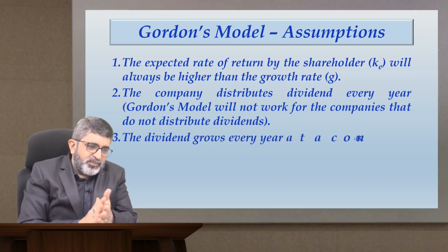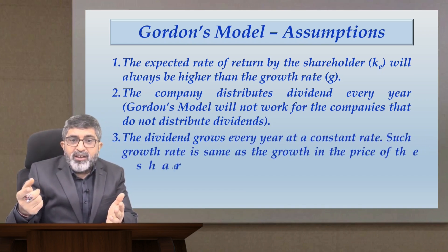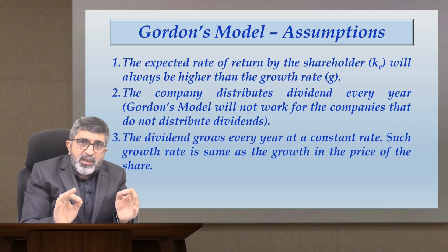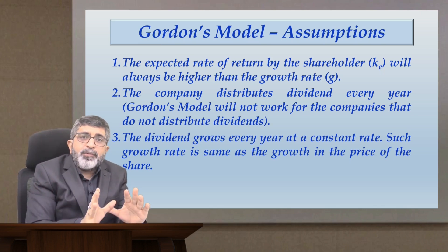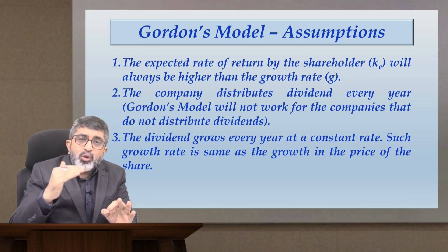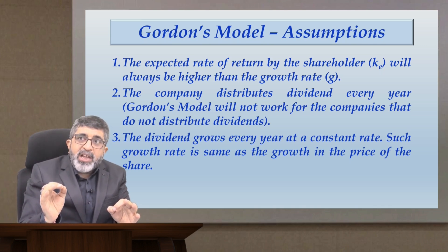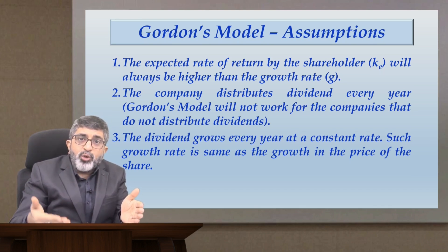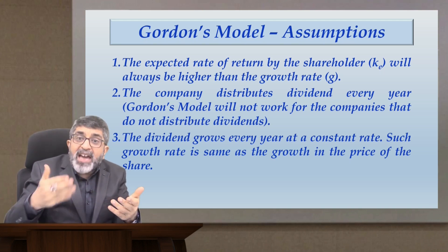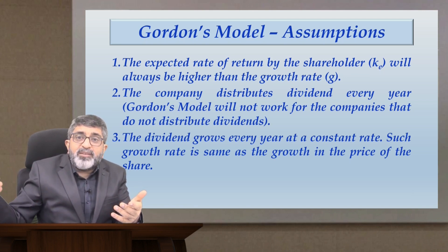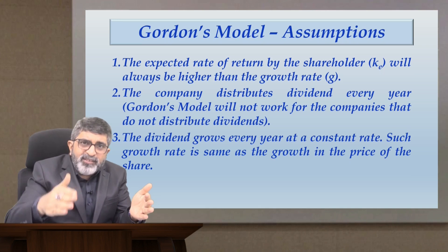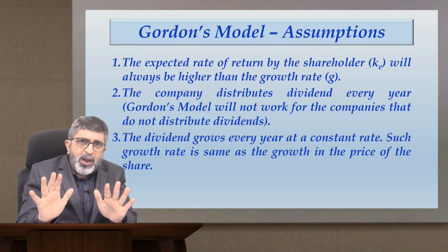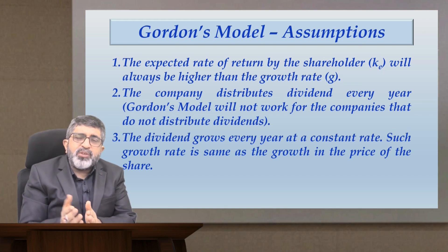The third assumption is that the dividend grows every year, and it grows at a constant rate. This is just one aspect of Gordon's model — the dividend grows at a constant rate. Later on, we will talk about concepts of super-normal growth, where the dividend grows at a varying rate — different rates of growth experienced over a time horizon. That is where we will introduce the two-stage and three-stage dividend discount model introduced by Gordon. For now, keep in mind that dividends grow every year at a constant rate.